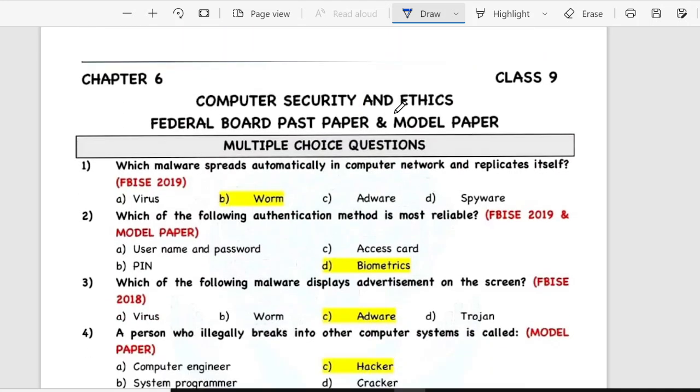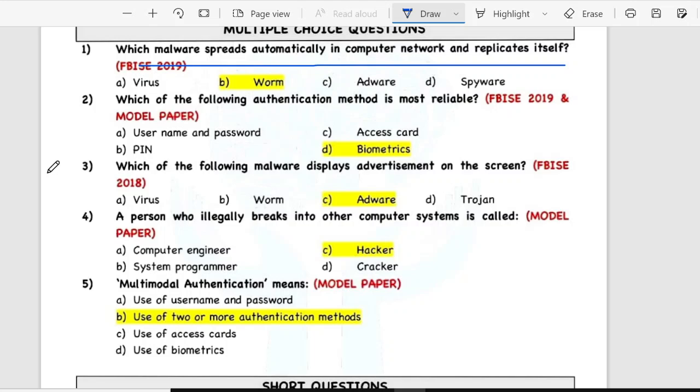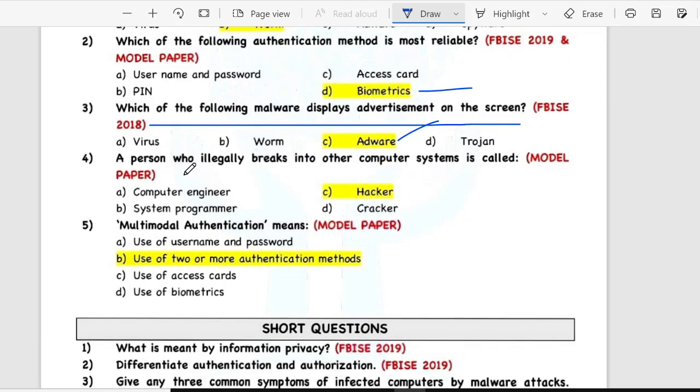Sixth chapter, Computer Security and Ethics. Number one is MCQs: which malware spread automatically in computer network and replicate itself? Worm. Second is the following authentication method is more reliable: biometrics. Third is the following malware display advertisement on the screen: adware. A person who illegally breaks into another computer system is called hacker. Multimodal authentication means use of two or more authentication methods.